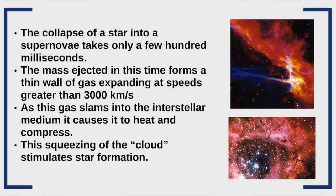The collapse of a star into a supernova takes only a few hundreds of milliseconds, and the mass ejected in this time forms a thin wall of gas that expands at a speed greater than 300 kilometers per second. As that gas slams into the interstellar medium, it heats and compresses it, and that cloud can then undergo star formation.